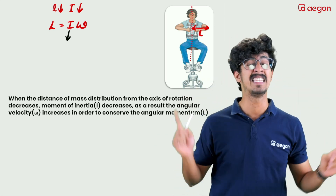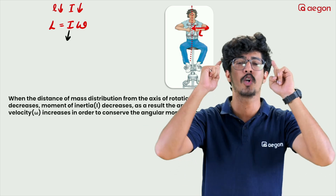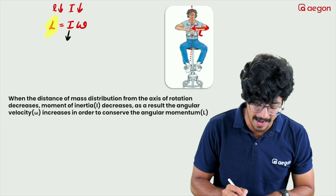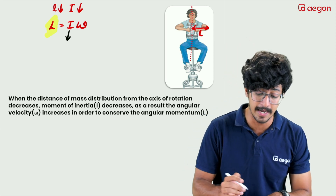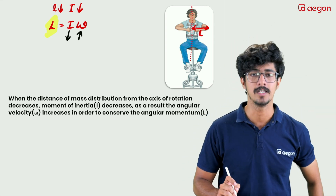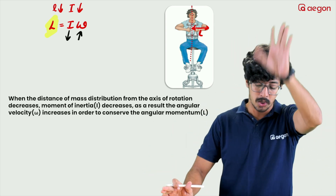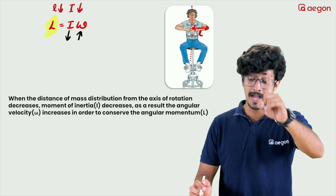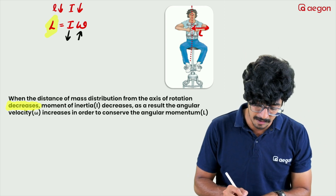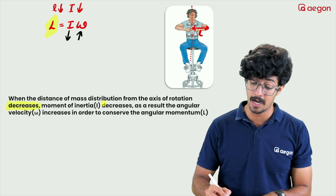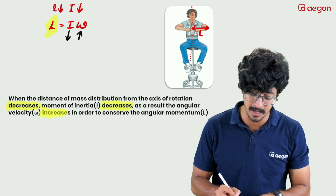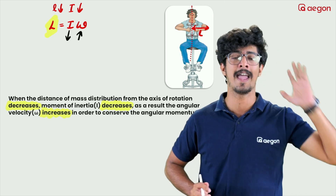Since there is no external torque, we are able to conserve the angular momentum. If we want to conserve it, we will increase our angular velocity omega. When the distance of mass distribution from the axis of rotation decreases, the moment of inertia also decreases. As a result, angular velocity increases in order to conserve the angular momentum.